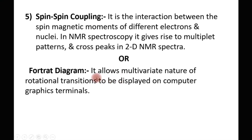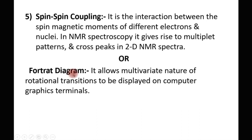The last question is: explain the portrait diagram. In spectroscopy, the portrait diagram is a diagram that allows the multivariate nature of the rotational transition to be displayed on computer graphics terminals. The diagram which allows this multivariate nature of rotational transitions to be displayed on computer graphics terminals is known as the portrait diagram.